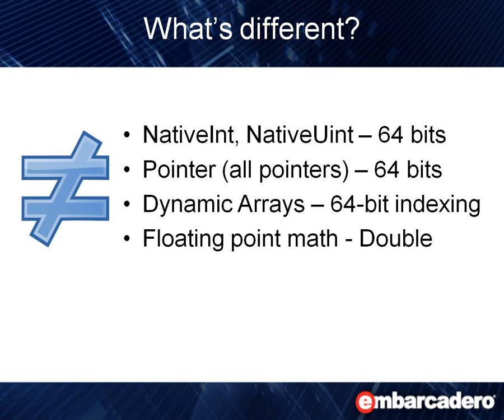So what's different? If you use NativeInt and NativeUInt on 64-bit, those will be 64-bit values, and on 32-bit they'll be 32-bit values. All pointers will be 8-byte pointers in 64-bit Windows and 4-byte pointers in 32-bit Windows. Dynamic arrays will be 64-bit in 64-bit Delphi on Windows. Floating point math will be double precision, or 8 bytes, in 64-bit.